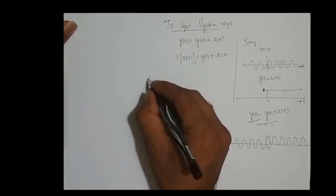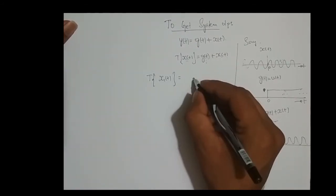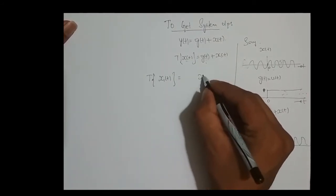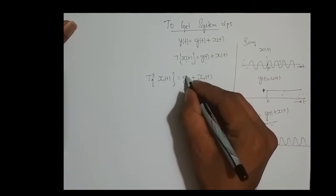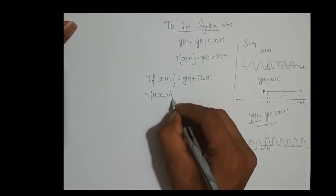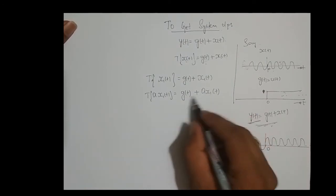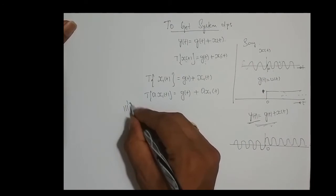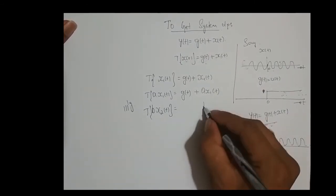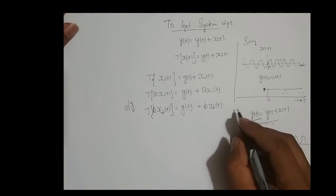Now, if I feed x1 of t to the system, whatever signal I feed, g of t gets added to it. So for x1 of t, g of t is getting added. What if I feed a scaled version of the input — a times x1 of t? For that signal, g of t gets added. So the output is g of t plus a times x1 of t. Similarly, if I feed b times x2 of t, for that signal g of t also gets added.